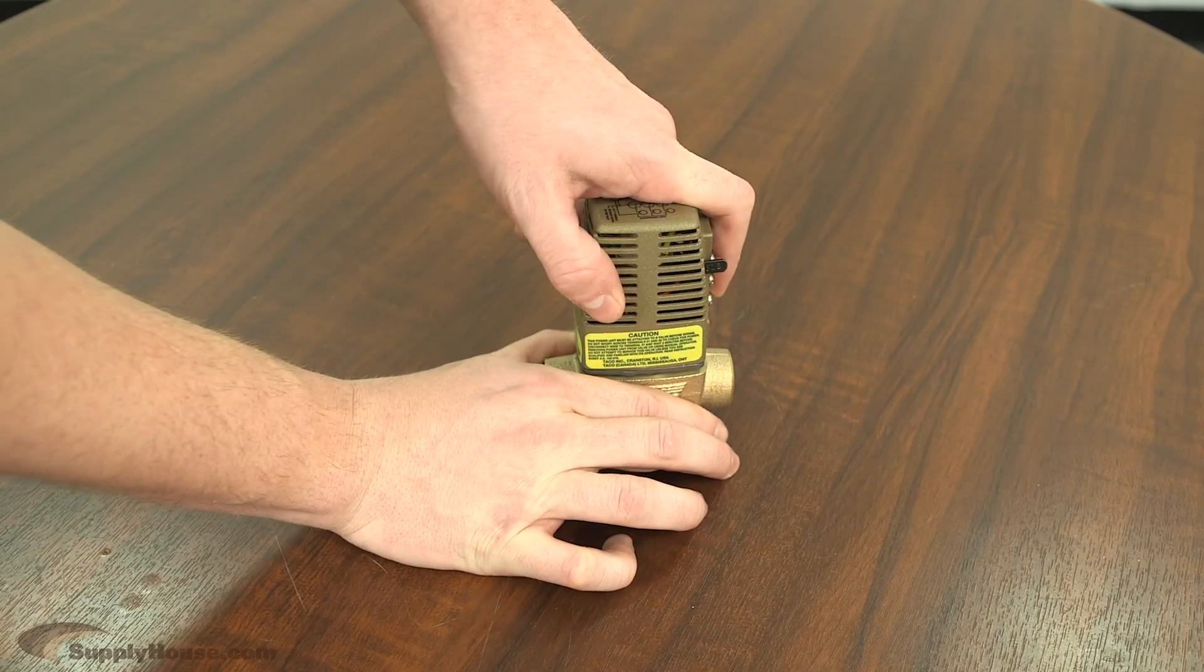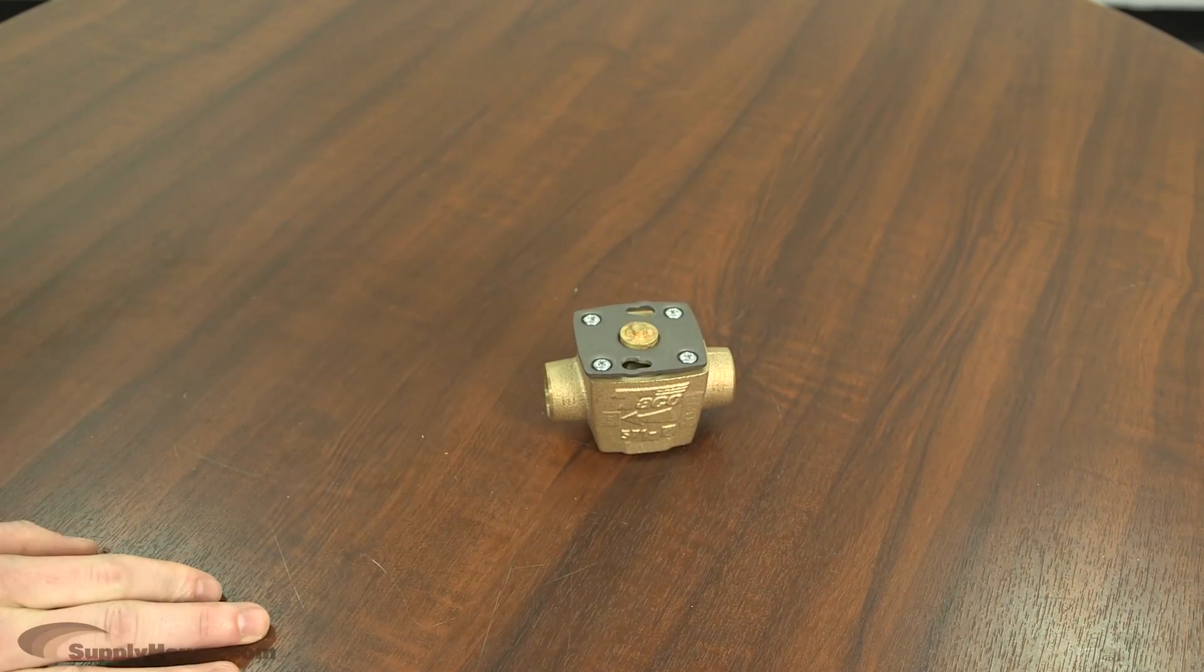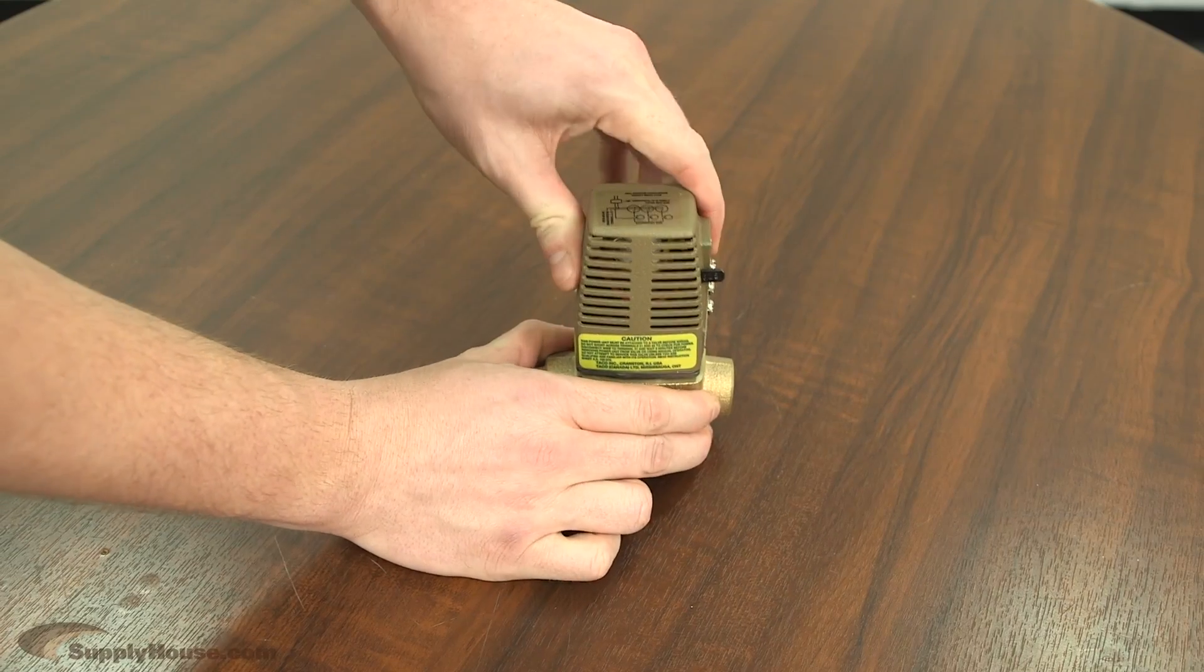For the Tayco heat motor zone valves, you twist the actuator, and then it should come right out, and then you bring in the new one, line up the pegs with the holes, and twist it back on.